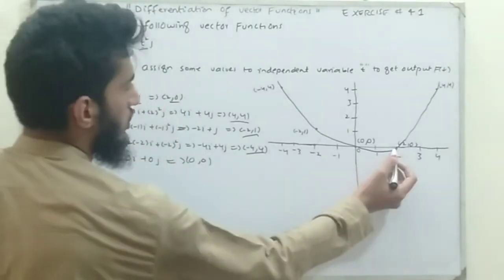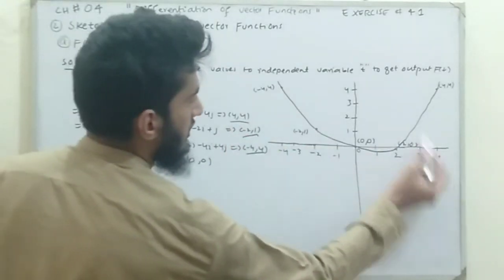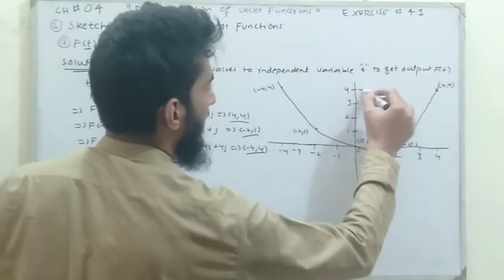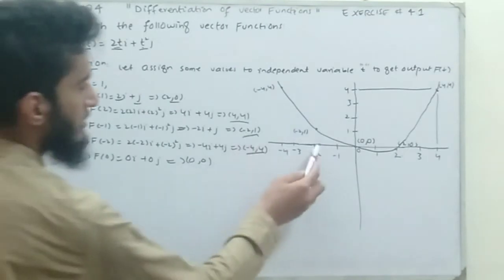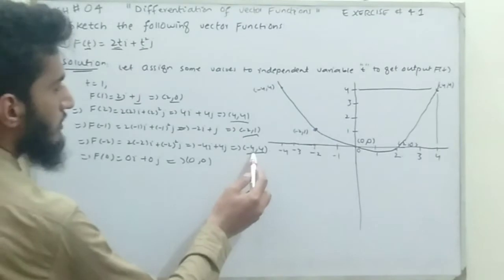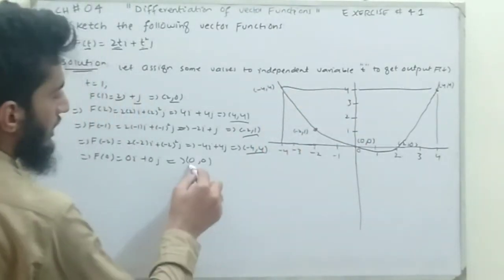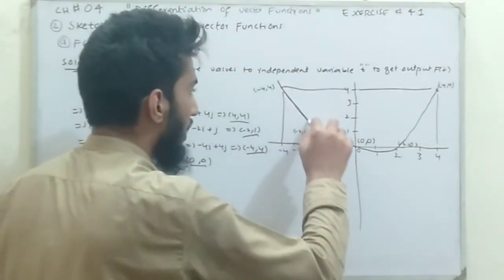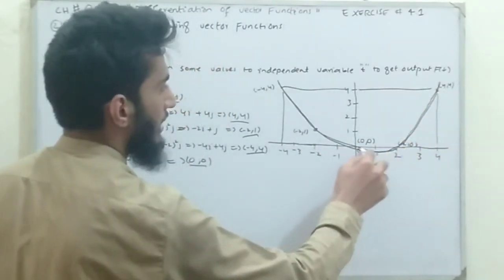Now let's show these points in the graph on the Cartesian plane. When x = 0, y = 0. When x = 4, y = 4, so I plot that point. The point where x = -2 and y = 1 is plotted here, and for (-4, 4) this is minus 4 along the x-axis to the point 4 along the y-axis. The last point is the origin (0, 0). Now draw the parabola passing through these points — this is the graph for part a.